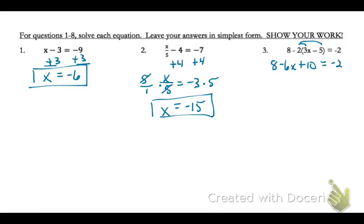Now we want to undo the math that's being done to x. I notice that my 8 and my 10 are on the same side of the equal sign, so I'm going to add those, because it's 8 plus 10. And I'll just bring my other terms down.